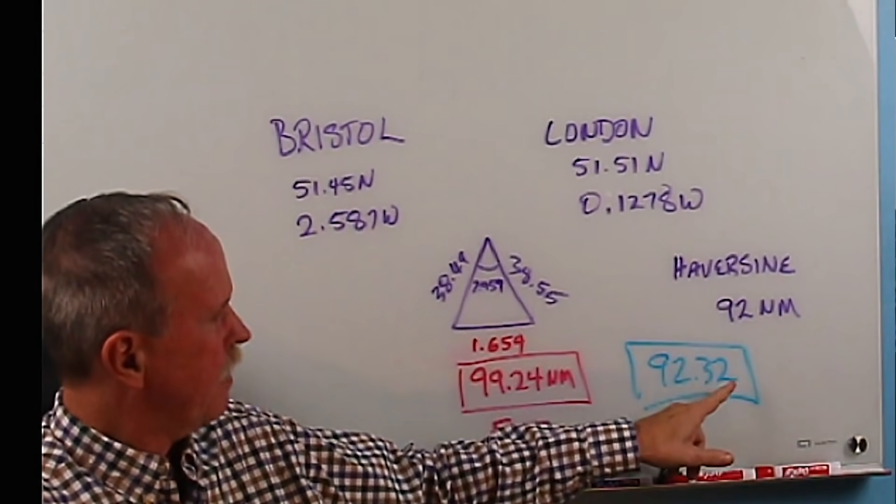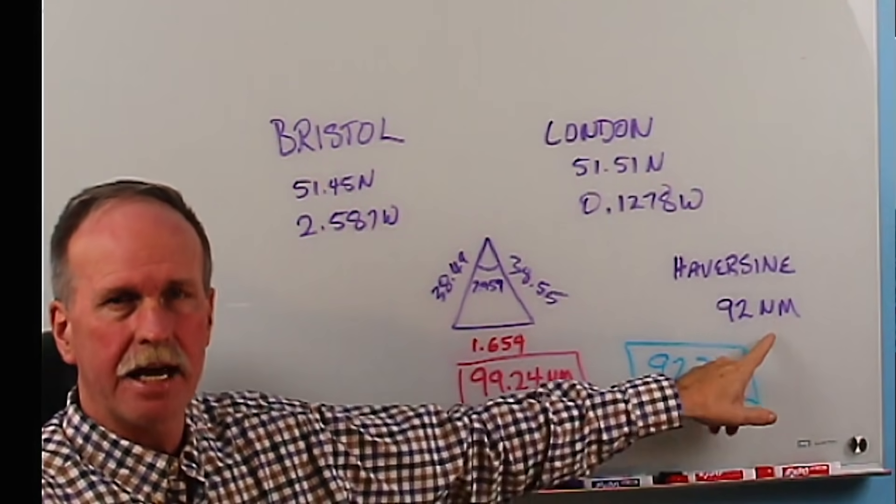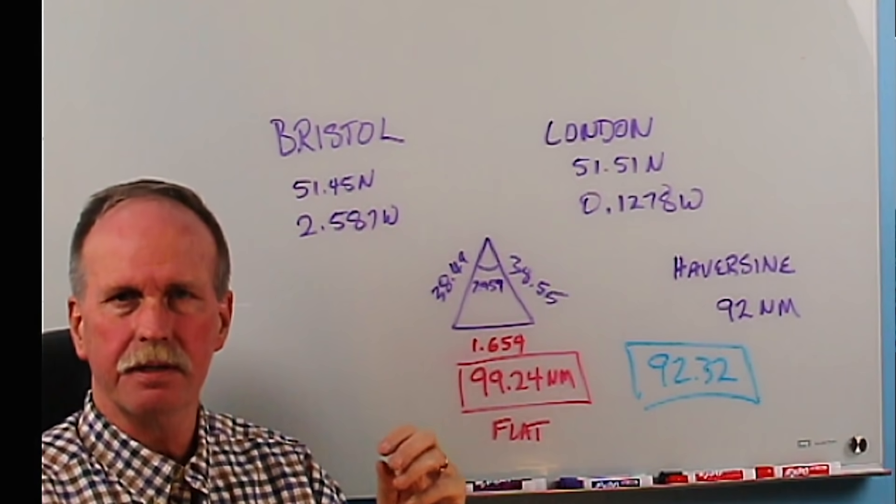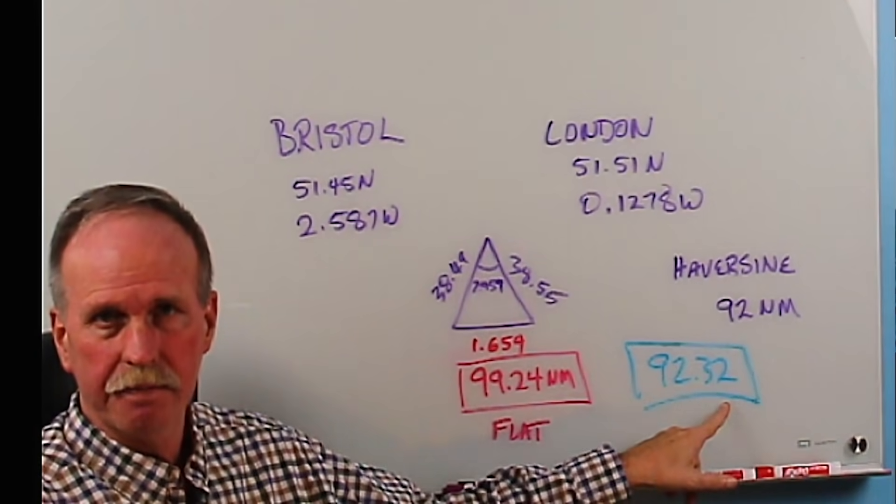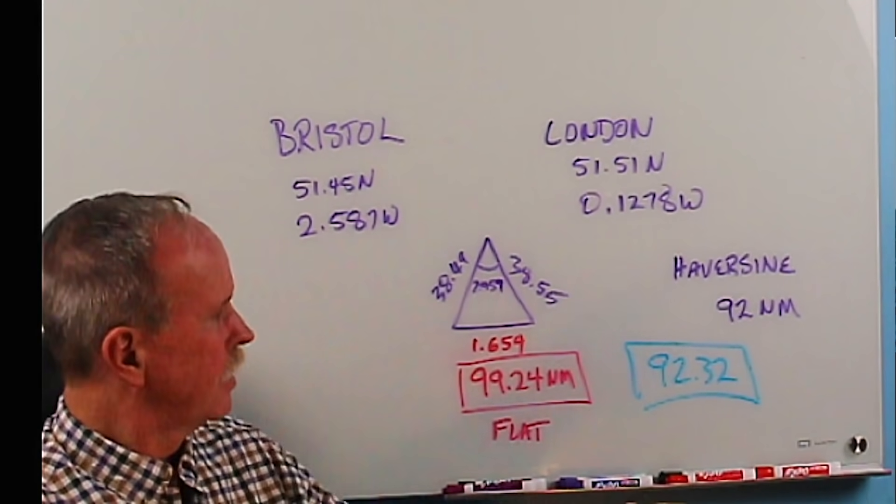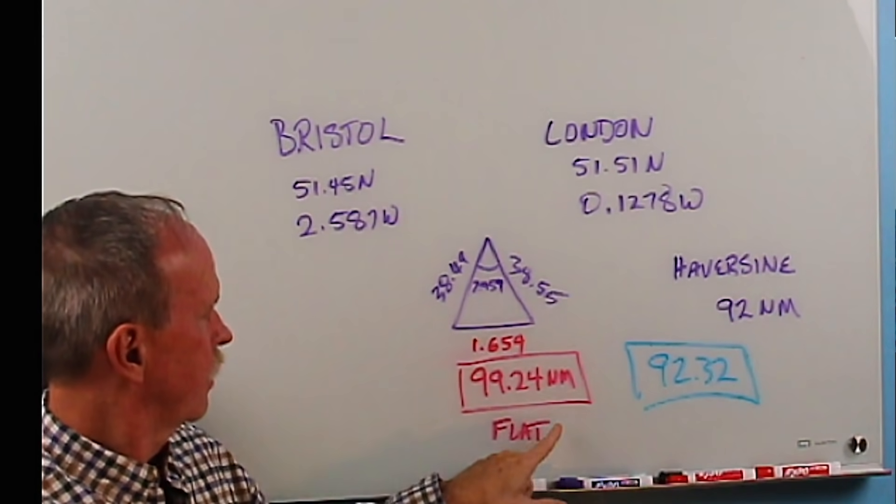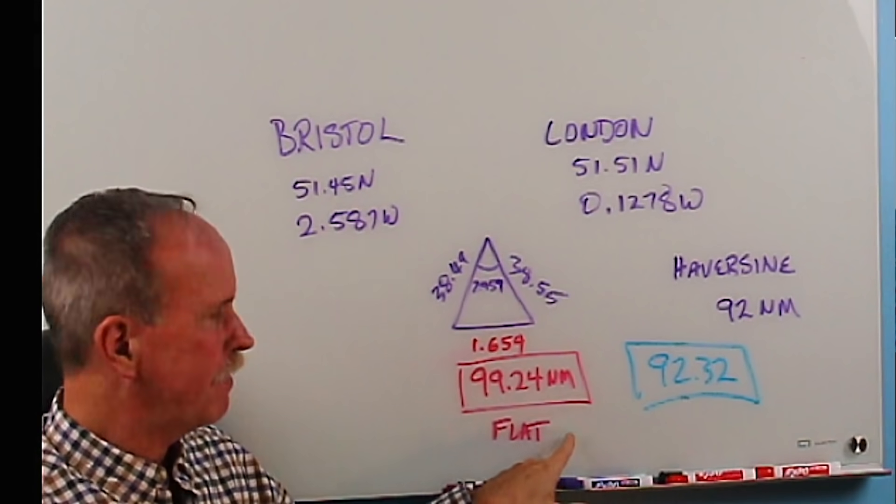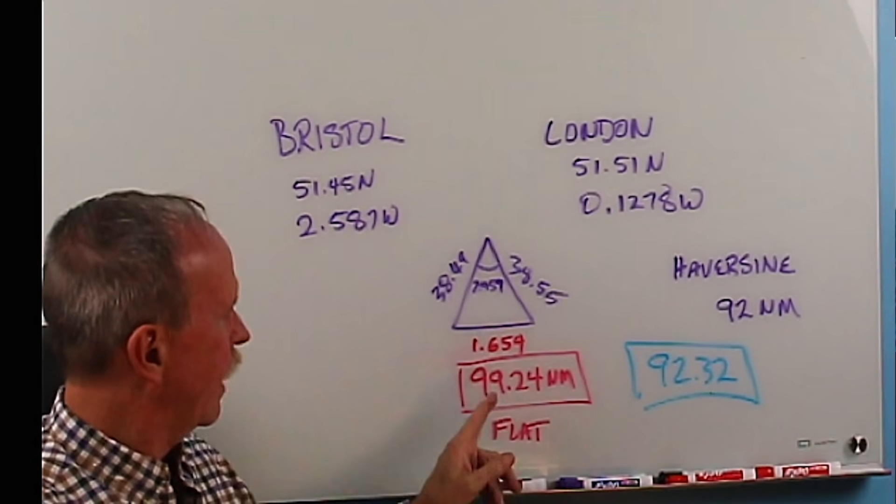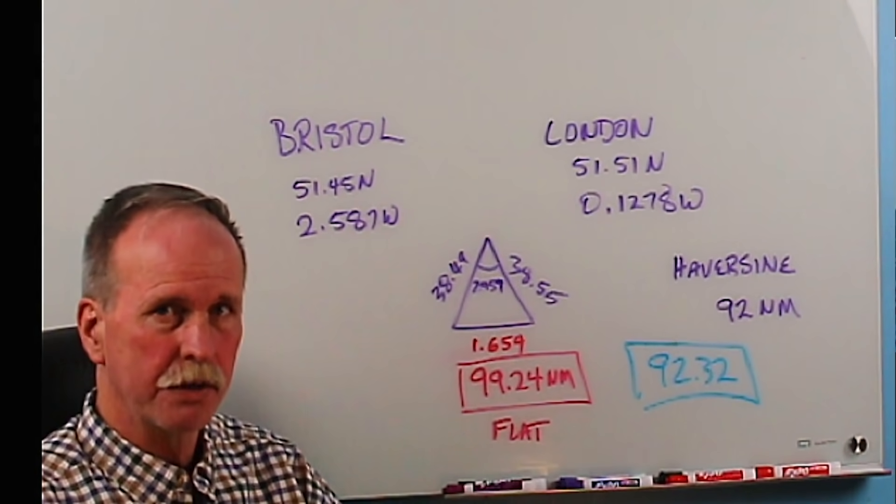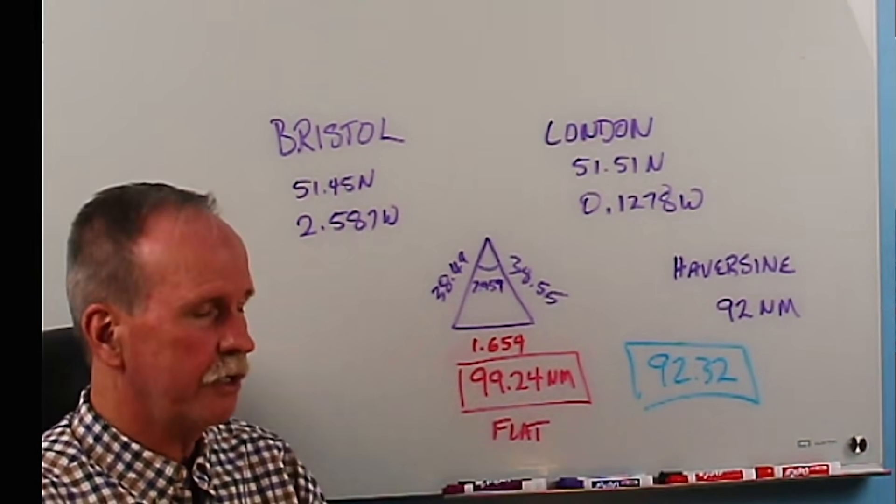Now, do these numbers have to exactly match? No, because we have some error in this number. That number assumes a perfectly spherical earth, whereas the actual earth is an oblate spheroid. That changes it very slightly. But you know, it's good enough to tell that that better represents the shape of the earth than that does. In fact, it effectively rules out the possibility that the earth could be flat. Because if the earth was flat, it would be just over 99 miles to Bristol from London, where in reality, on a curved surface of a spherical earth, it's only 92.